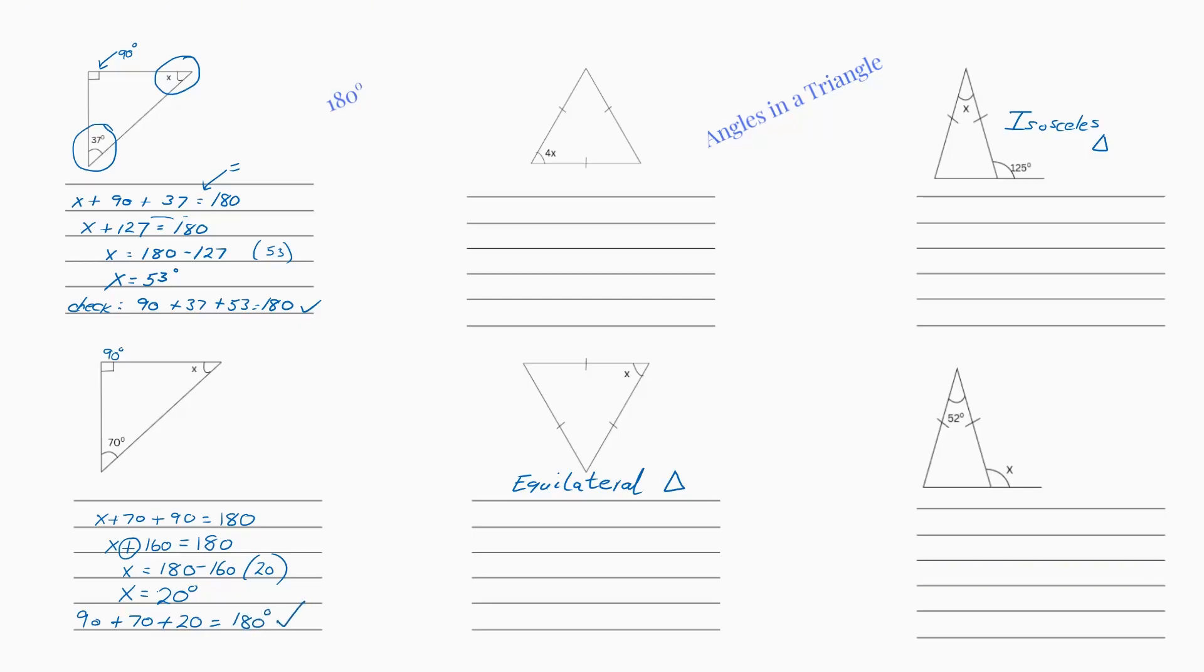So this one's slightly different. So you should know by now that this is an equilateral triangle. Why is it an equilateral triangle you ask? Because it's saying that all angles are the same. They all equal the same.